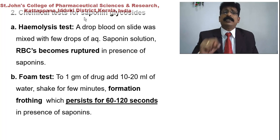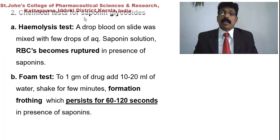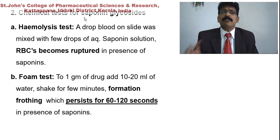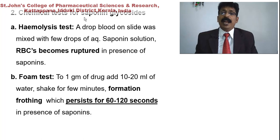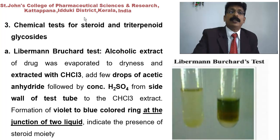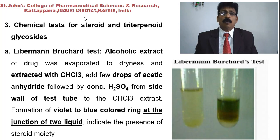Chemical tests for saponin glycosides: hemolysis test — place one drop of blood on a slide, mix with a few drops of aqueous saponin solution; red blood cells are lysed, confirming presence of saponins. Foam test — add one gram of the drug to 10–30 ml of water and shake for a few minutes; formation of frothing that persists for 60–120 seconds indicates presence of saponins.